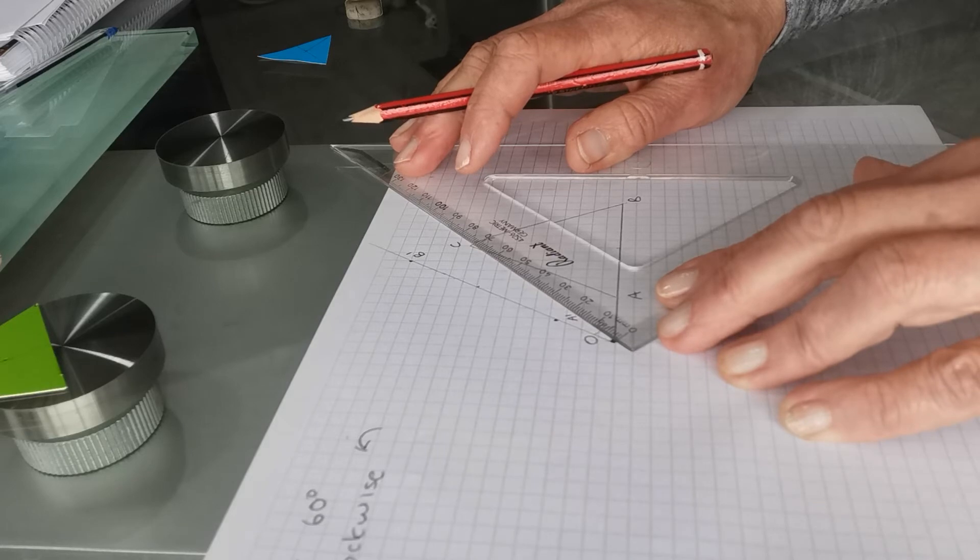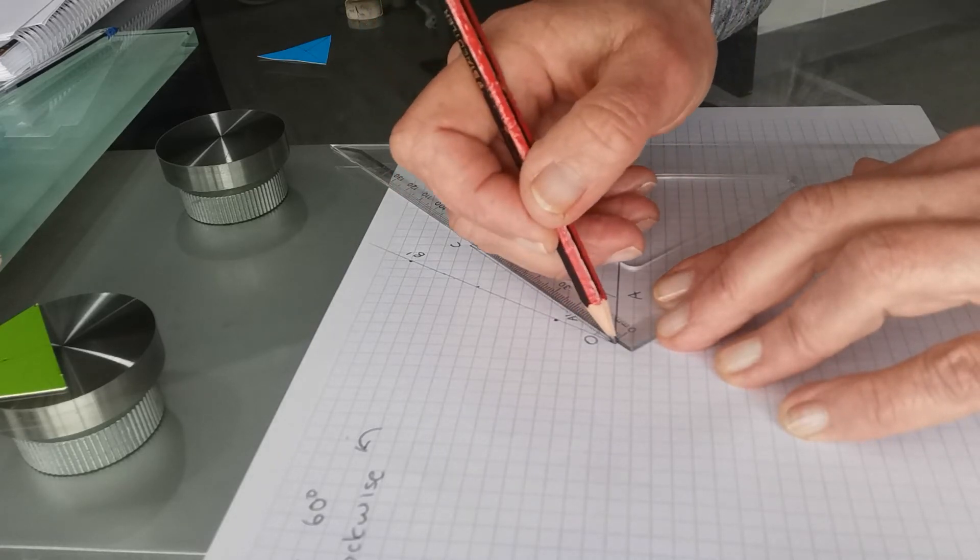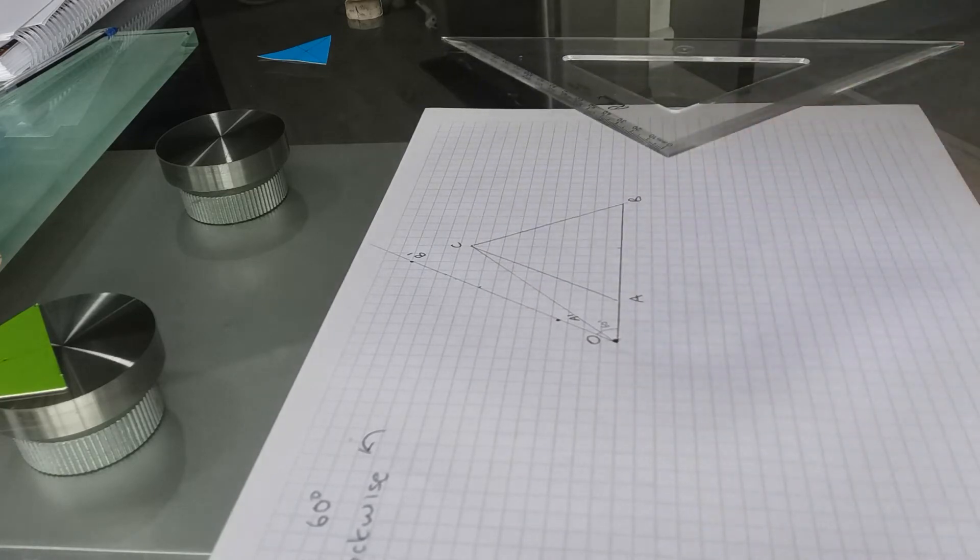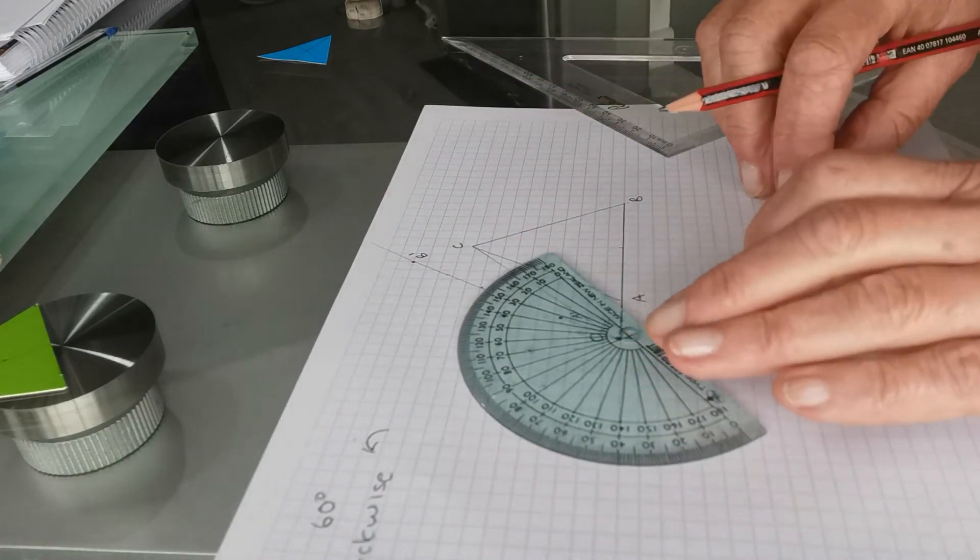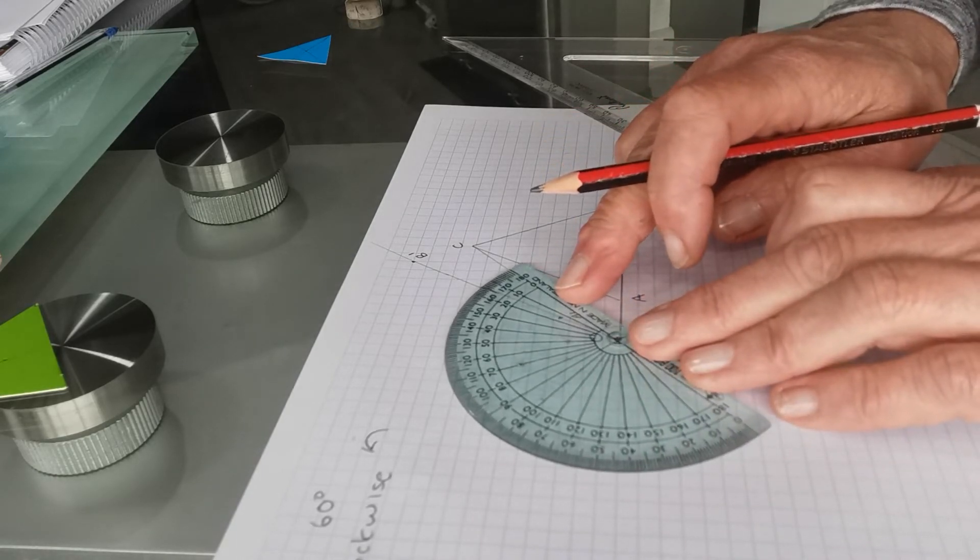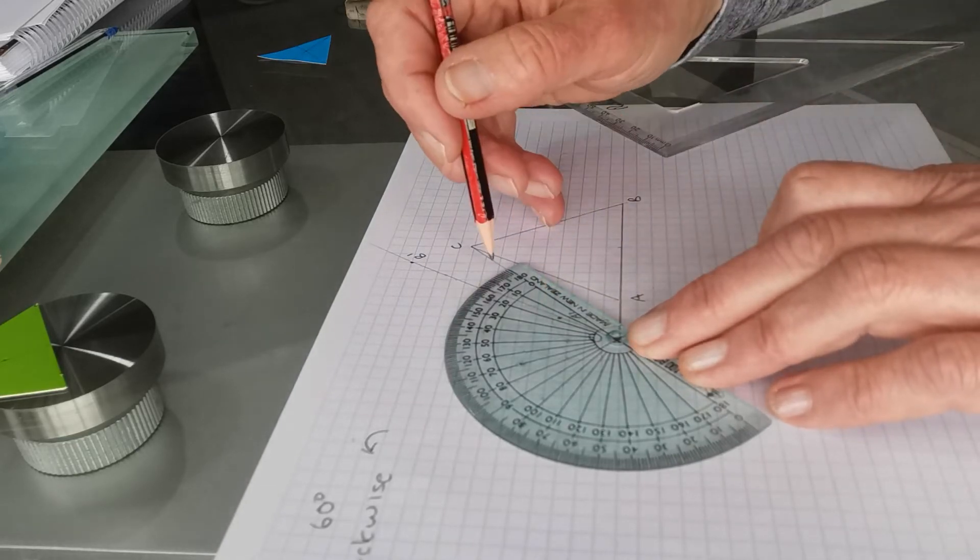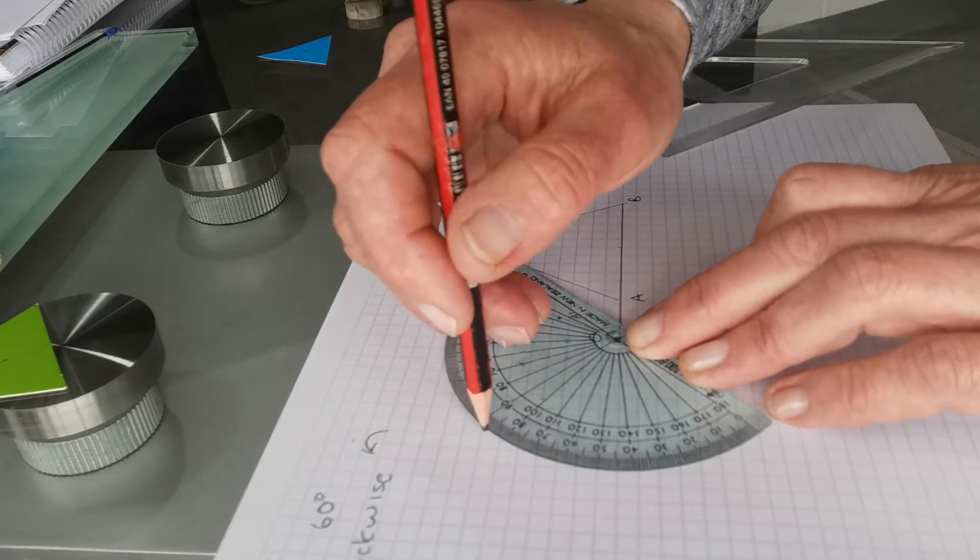Draw a line from C to the center of rotation. Here it is. And we need to measure 60 degrees from that line. Putting the protractor right on the center of that line from C and going in an anti-clockwise direction around here.